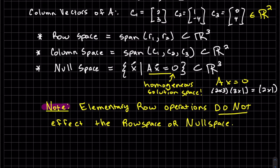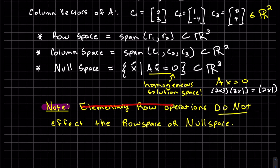So just a note here, when you do elementary row operations, those do not affect the row space or the null space. Because we are using row operations, so it doesn't affect the row space. And these are the same space, subsets of the same space.